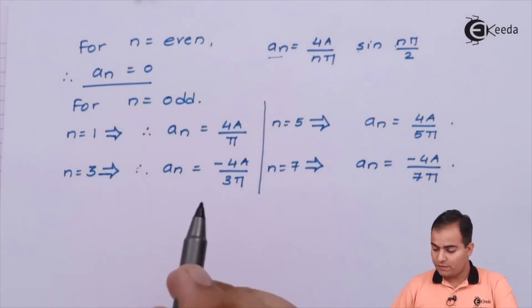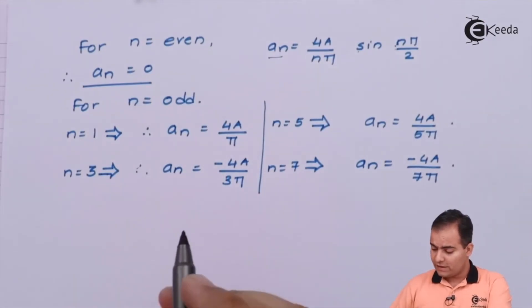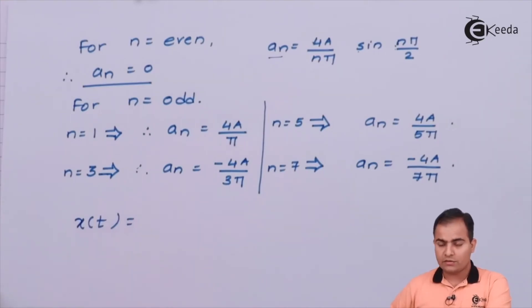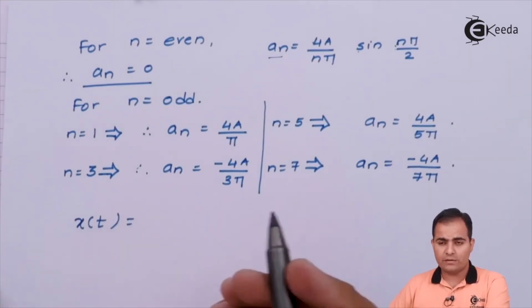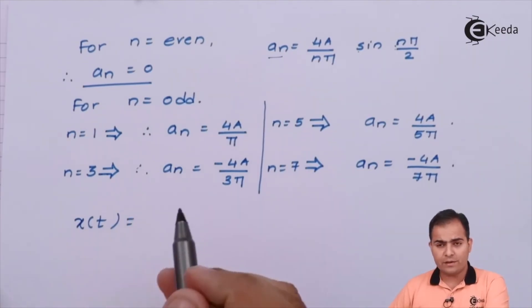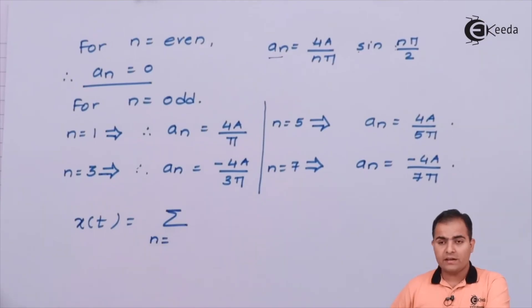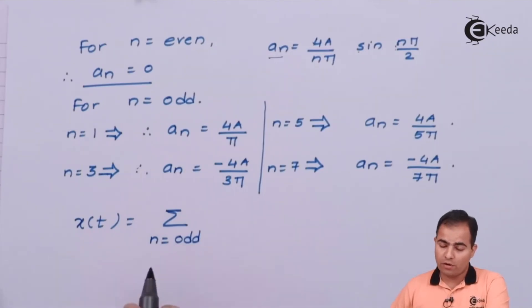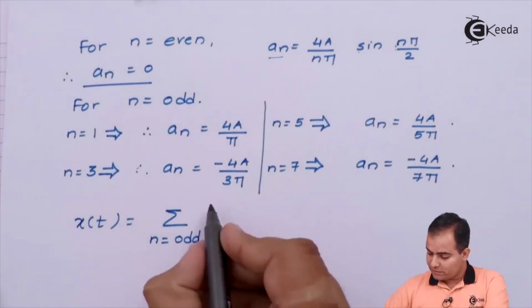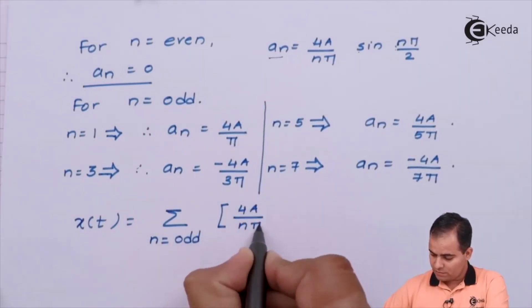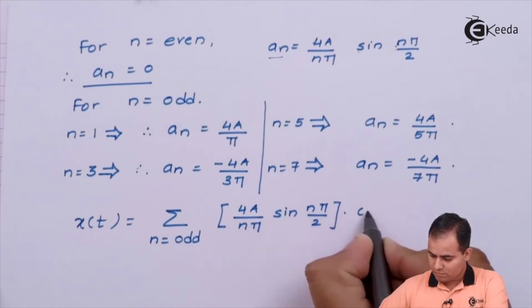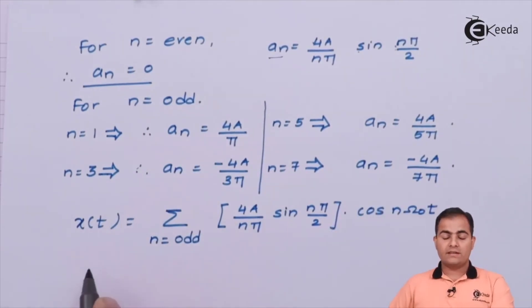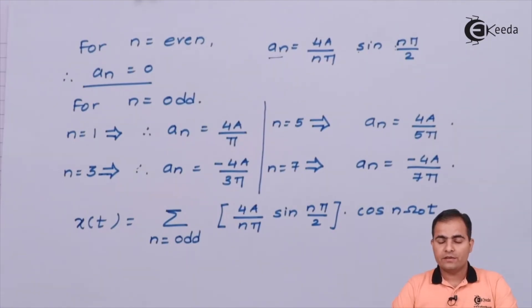We write the trigonometric form of the Fourier series. Since a₀ = 0 and bₙ = 0, we substitute only the aₙ values, where summation is only over odd values of n. This gives x(t) = Σ aₙ cos(nω₀t) for odd n, with aₙ = (4A / nπ) sin(nπ/2). That's all for now; we will study a new numerical in the next video. Thank you for watching — stay tuned to Ekeda and subscribe for further videos.